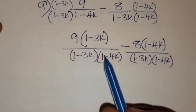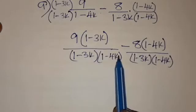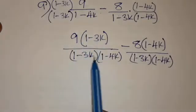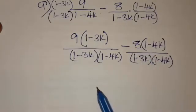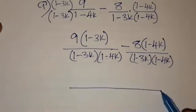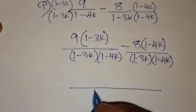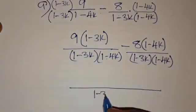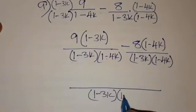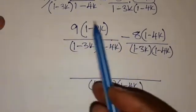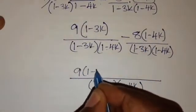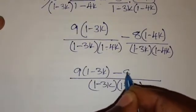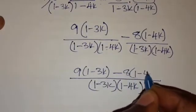Now that the denominators are the same, we can see that both fractions share the denominator (1 minus 3K)(1 minus 4K). So we pick one denominator and write the numerators as they are: 9(1 minus 3K) minus 8(1 minus 4K).